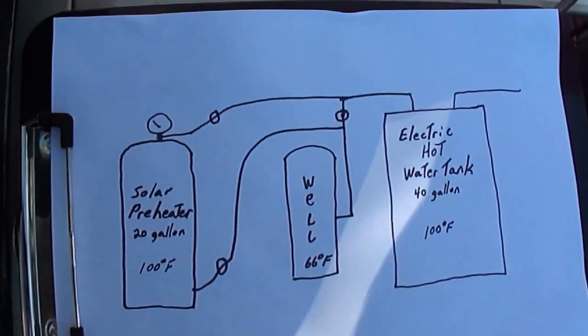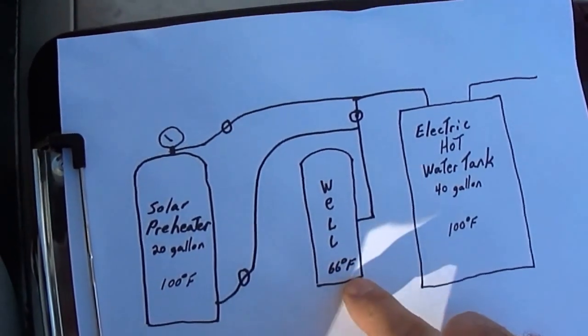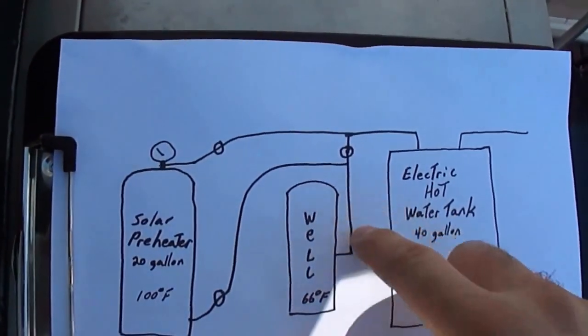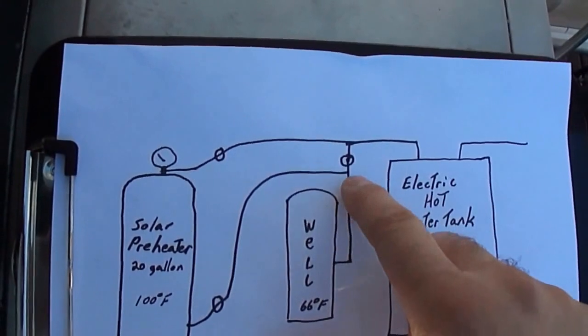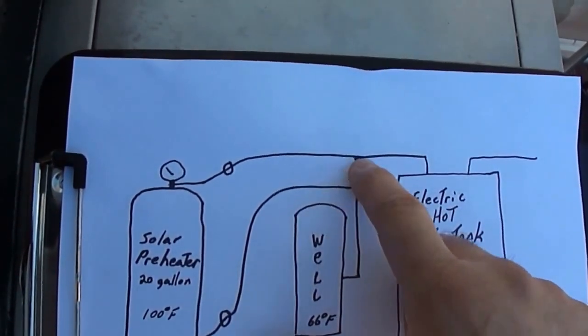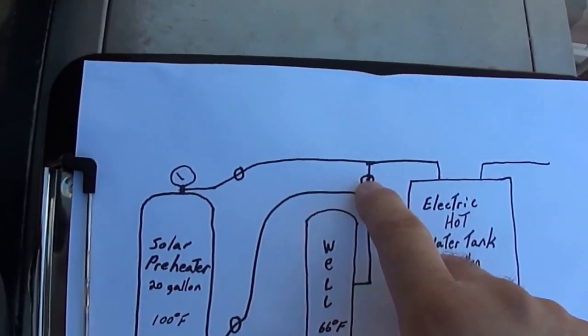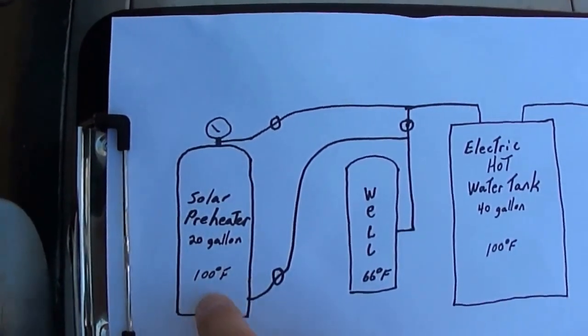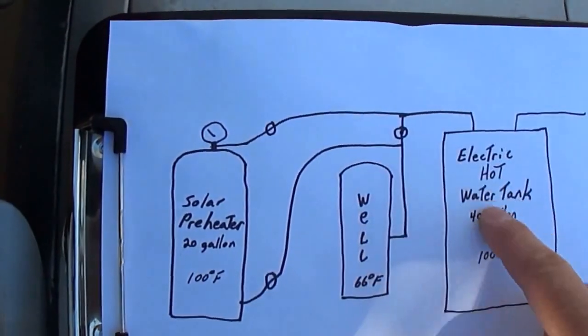My cold water goes to supply my electric hot water heater through this line here. I put a valve in there and tapped in before the valve and after the valve. So when I close this valve it diverts the water to the outside tank and then comes back in to go to the water heater.